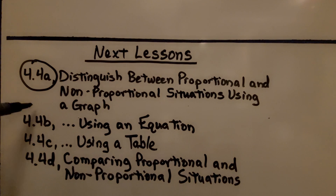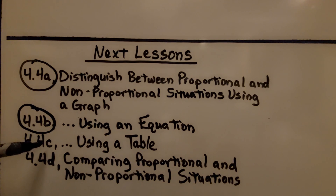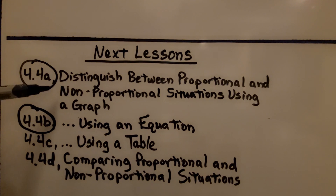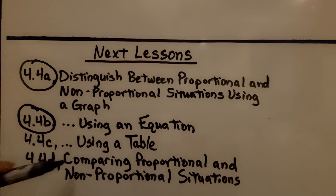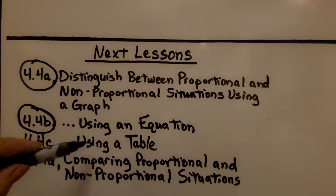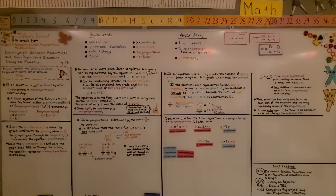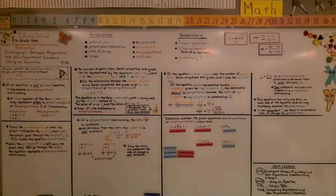We're finished with part b. We're going to move on to part c, which has the same beginning: distinguish between proportional and nonproportional situations — using a table this time. I hope you enjoyed the rest of your day and that this all makes sense. Please join me for the next part of the lesson.